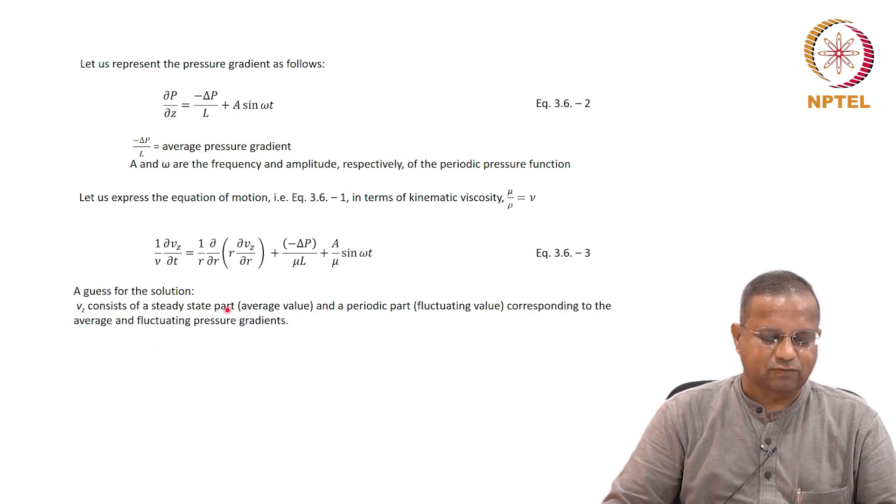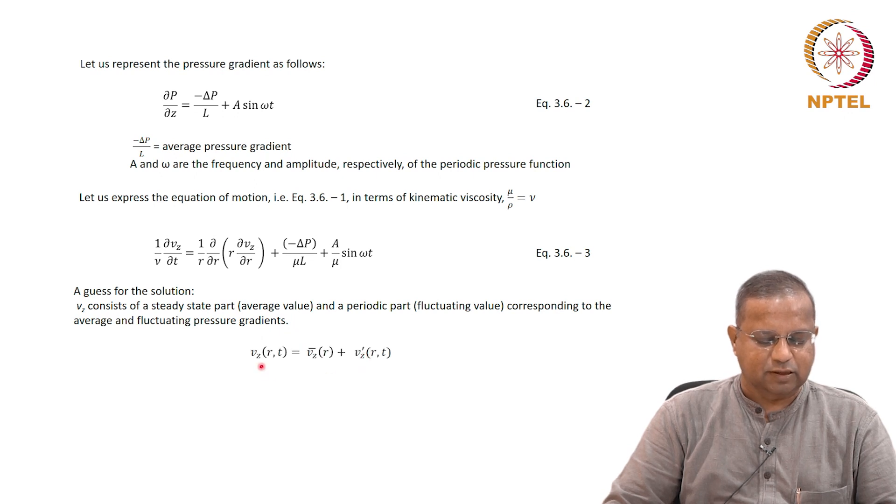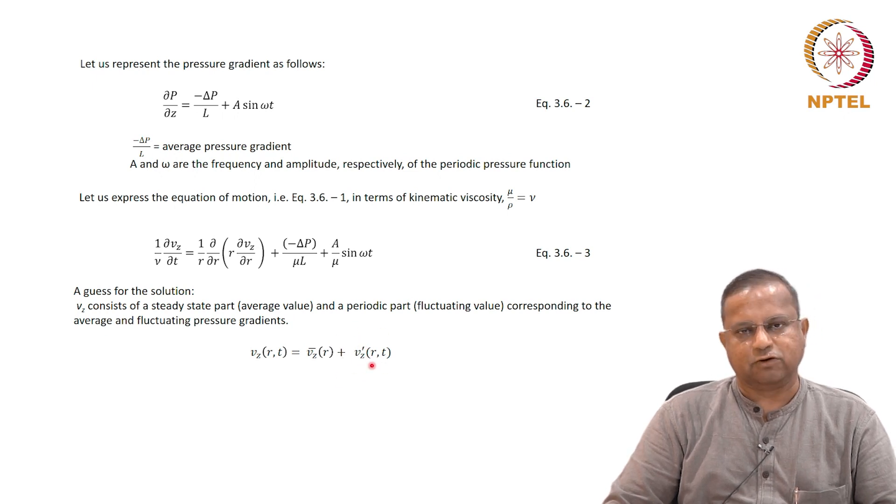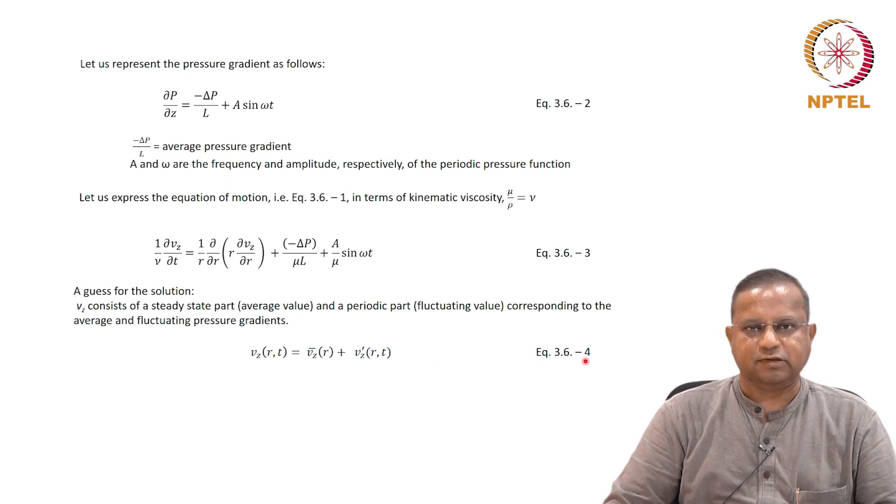A guess for the solution: v_z consists of the steady state part, an average part, and a fluctuating part—the same approach as earlier, corresponding to the average and fluctuating pressure gradients. Therefore v_z, which is a function of r and t, is an average value (a function of r alone, not a function of t) plus a time-varying fluctuating component v_z' which is a function of both r and t. This is equation 3.6-4.